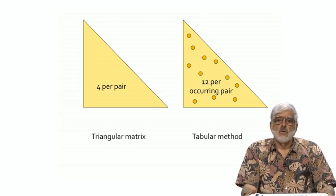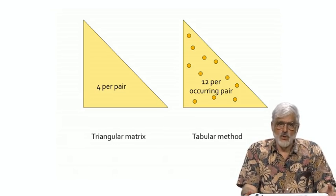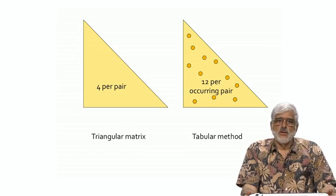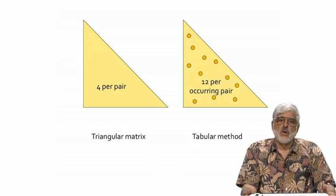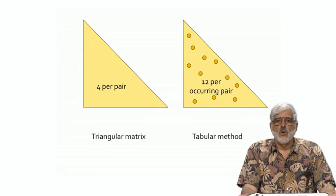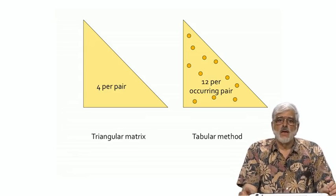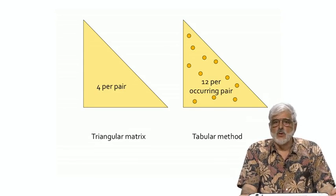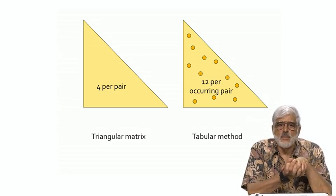Here's a picture of the difference. For the triangular matrix, you need four bytes per unit area of the triangle. For the tabular method, you need 12 bytes times the fraction of the area that represents pairs actually present. So if more than one-third of possible pairs are present in at least one basket, you prefer the triangular matrix. If you expect fewer than a third of the possible pairs to be present in the data, then you should go for the tabular approach.